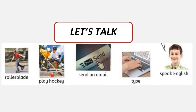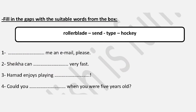Let's talk about could and couldn't. The vocabulary includes: roller blade, play hockey, send email, type, and speak English. Here are some things you could or couldn't do when you were young. 'Type' means to write on a keyboard. Number one: '___ me an email please.' Number two: 'Sheikha can type very fast.' Number three: 'Hamad enjoys playing hockey.' Could you roller blade when you were five years old?